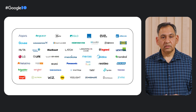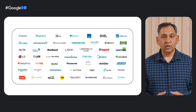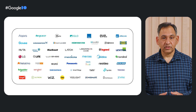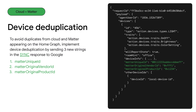As a reminder, Matter was released in October 2022 and many major brands and platforms are supporting the development of this standard. Once you have created your Matter integration, be sure to implement Matter device deduplication to avoid duplication of the same device showing up as both a Matter and a cloud device in Home Graph. You just have to add three new additional fields — Matter unique ID, Matter original vendor ID, and Matter original product ID — to your sync response.